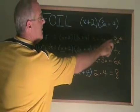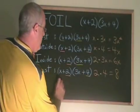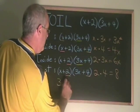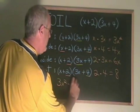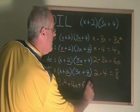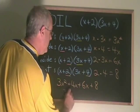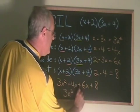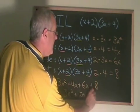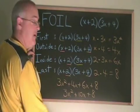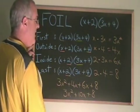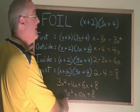Now we combine these terms together. We get 3x squared plus 4x plus 6x plus 8. And this simplifies to 3x squared plus 10x plus 8. If we combine the similar terms which are these two in the middle, our answer is 3x squared plus 10x plus 8.